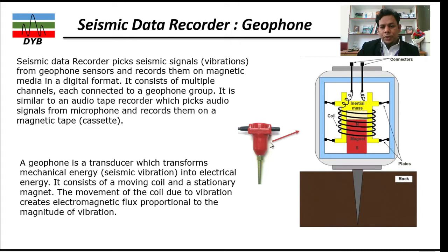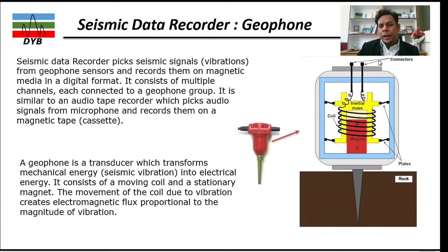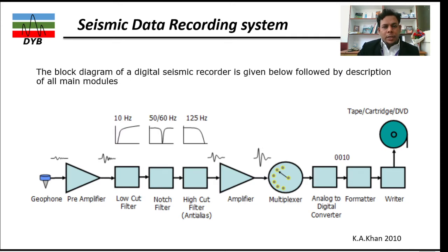Here is what an actual geophone looks like. Looking at its internal function: this part goes into the ground, and we have a magnet here with north and south poles. This is the coil, and once vibrations come in, energy from the body is converted from mechanical energy into electromagnetic flux. This signal is then connected to the channels and recorded at the surface by the recording system.